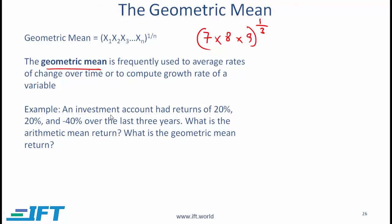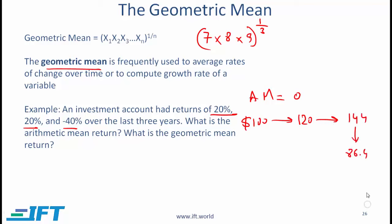Let's look at a simple example. An investment account had returns of 20%, 20%, and −40% over the last three years. The arithmetic mean is 20 plus 20 minus 40 divided by 3, giving zero. But is that what is really happening? If you invest $100, after year one you have $120, after year two $144, and after the −40% return in year three you end up with only $86.40. So effectively we have gone from $100 down to $86.40.